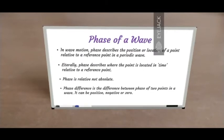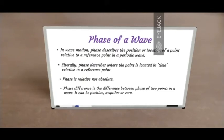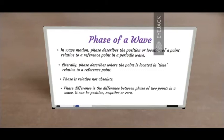Phase is defined only with respect to a reference point. What is phase difference? Phase difference is the difference between the phase of two points in a wave. So let's say there is a point at zero degrees and another at 90 degrees — the difference between them is 90 degrees, and that is the phase difference. It can also be expressed in radians, which is pi by 2 radians. It can be positive, negative, or zero.